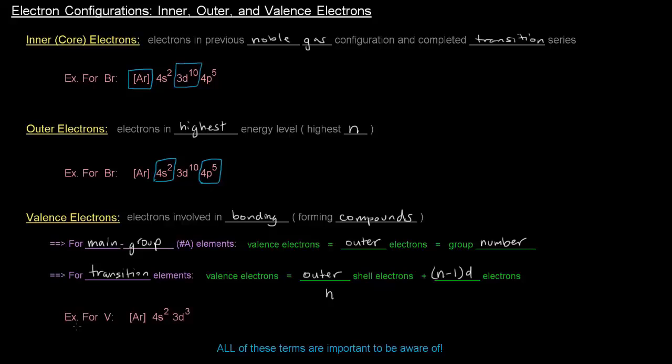So the example for vanadium, V. We've got all the electrons up until argon, and then 4s2 and 3d3. That's the electron configuration for vanadium. So the outer shell electrons would be 4s2, so that's those guys, plus the n minus 1 d electrons.